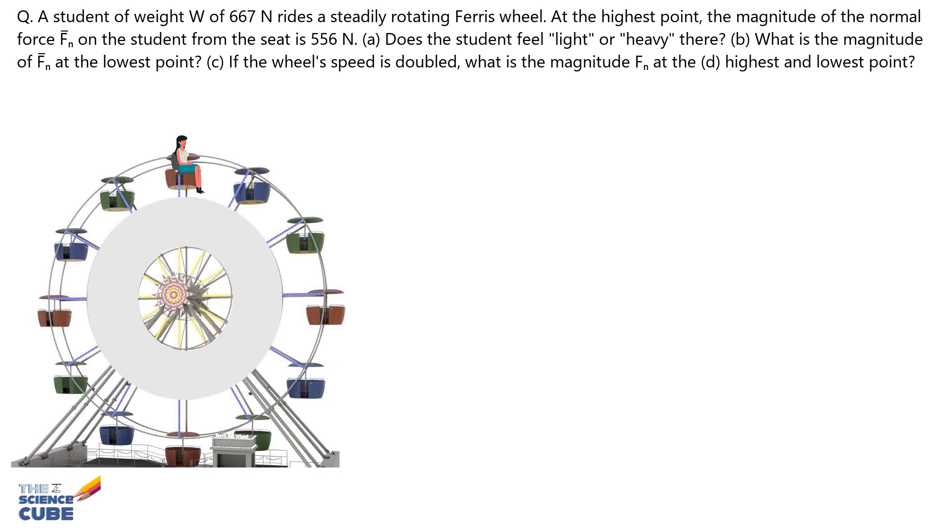What you have is a student with a weight W of 667 Newtons riding a steadily rotating Ferris wheel. Note the fact that it is rotating steadily, that is constant speed. And at the highest point, the magnitude of the normal force Fn on the student from the seat is 556 Newtons.